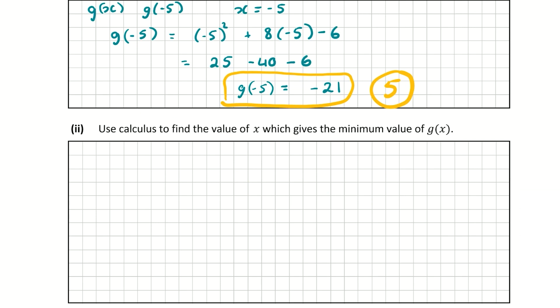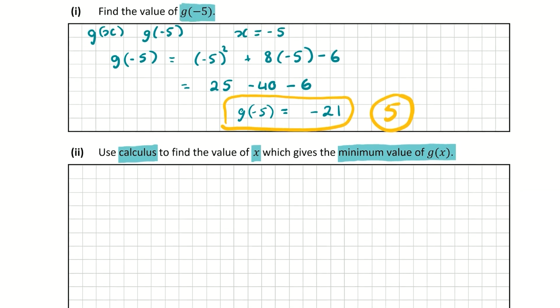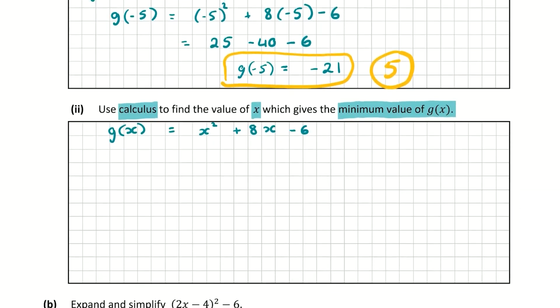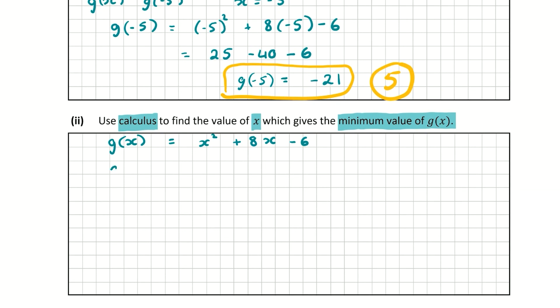Now the second part of question a asks us to use calculus to find the value of x which gives the minimum value of g(x). So when you're dealing with minimum and maximum values of functions, what you're going to want to do is find the derivative and let that equal to 0. So that's a general rule when you're asked a question like this. So I'm just going to write down the original function: g(x) equals x squared plus 8x minus 6. So we're going to derive this function and then let it equal to 0.